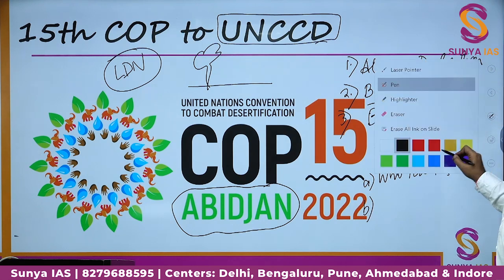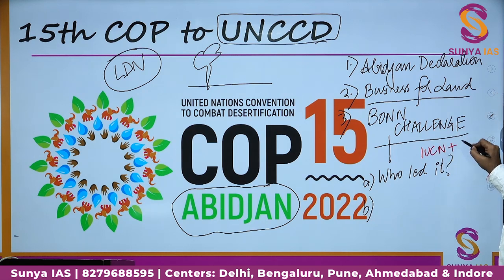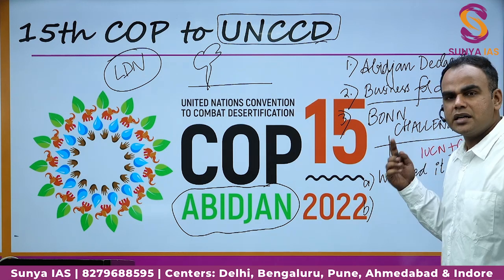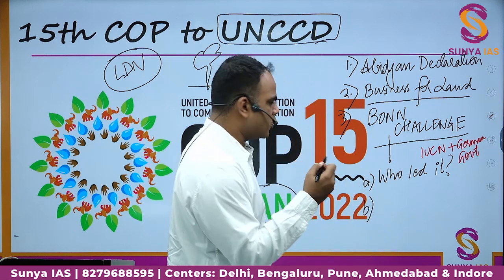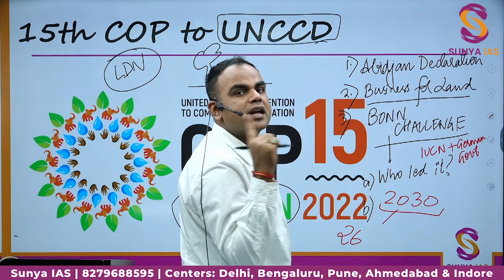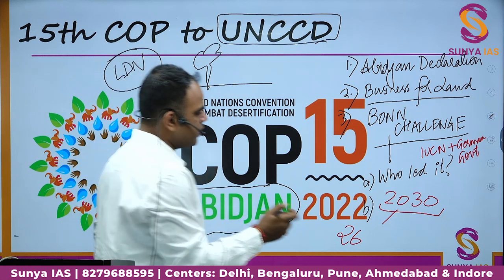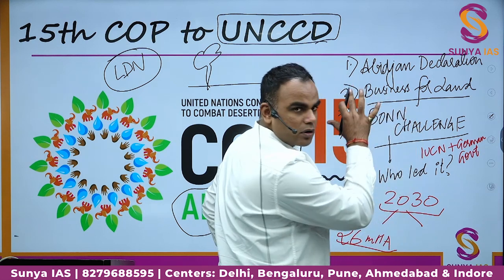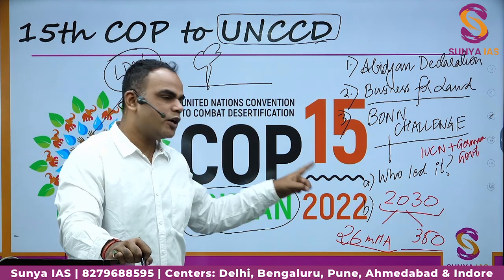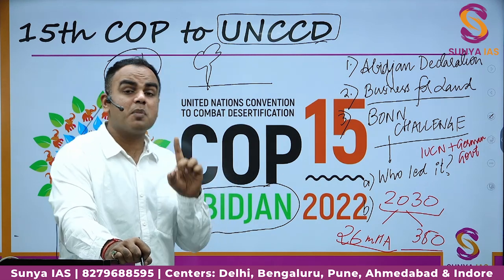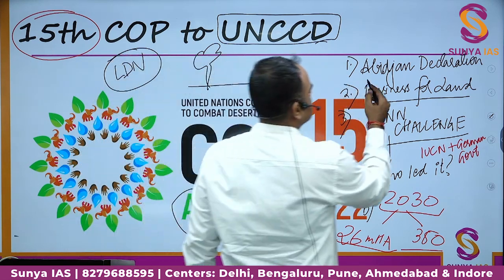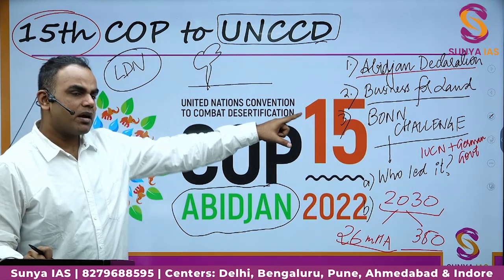The Bonn Challenge was led by IUCN and the German government. The most updated target: by 2030, India's target is 26 million hectares of land restoration, and the global target is 350 million hectares by 2030. Please keep these numbers in mind. Nothing very substantial happened at the 15th COP to UNCCD apart from the Abidjan Declaration, the Business for Land initiative, and reiteration of our commitment to the Bonn Challenge.